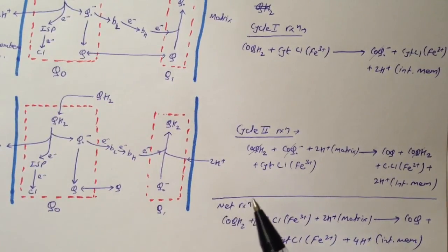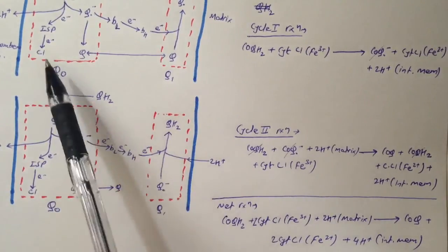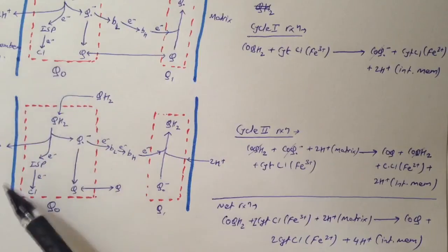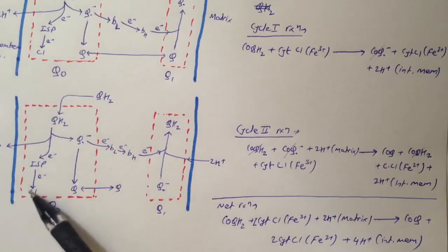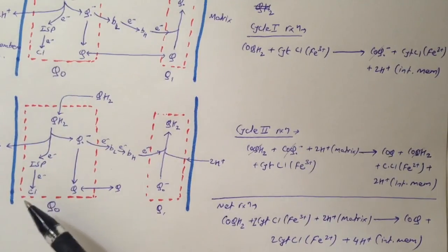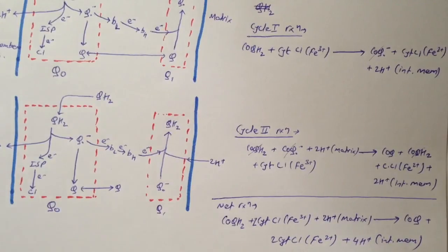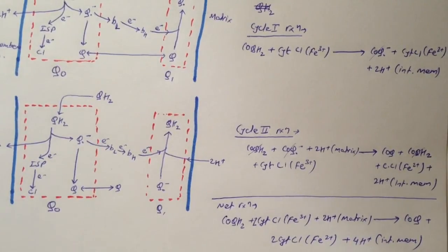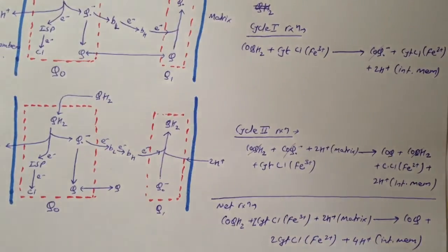Cytochrome c1 is reduced and the electron it receives is passed on to cytochrome C. That's our discussion of Q cycle. Thank you for watching — if you have any questions or comments please post below.